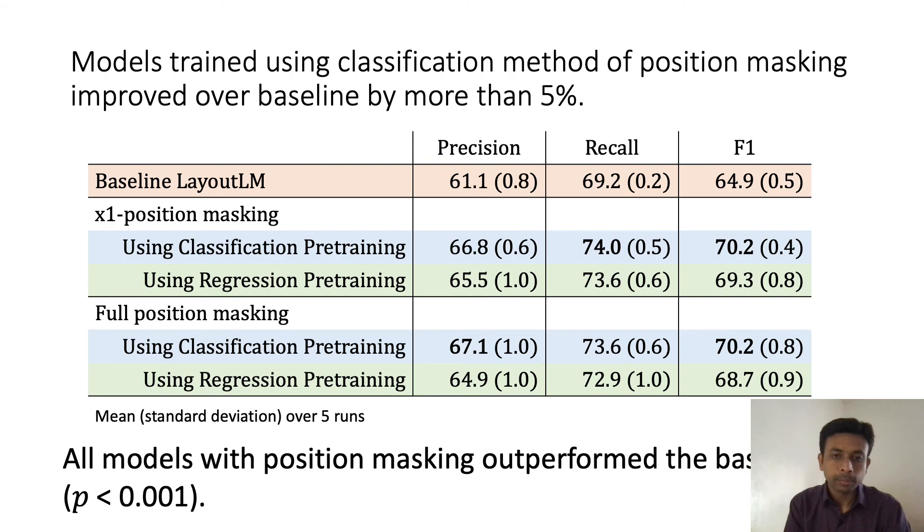Now let's look at the results. For position masking, these models were trained with both classification and regression loss. Compared to the baseline LayoutLM model, we can see a performance improvement over 5% with the classification loss. These results are averaged over five runs with five different seeds, and for pre-training, all these models were trained on the same dataset. We can see that position masking with both losses, for partial position masking with X1 and also full position masking, outperform the baseline LayoutLM model, and all of these results are statistically significant.